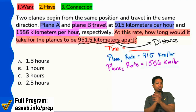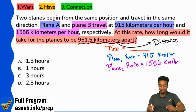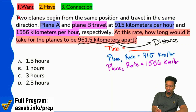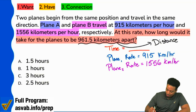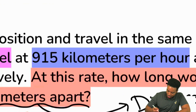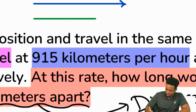Now let me help you understand this. Here's the main piece of information you should be highlighting: two planes begin from the same position and travel in the same direction. So what does that mean? Let me go ahead and show you this illustration. Let's suppose that we have two planes — Plane 1 going this speed in that direction, and Plane 2 going in the same direction at this speed.